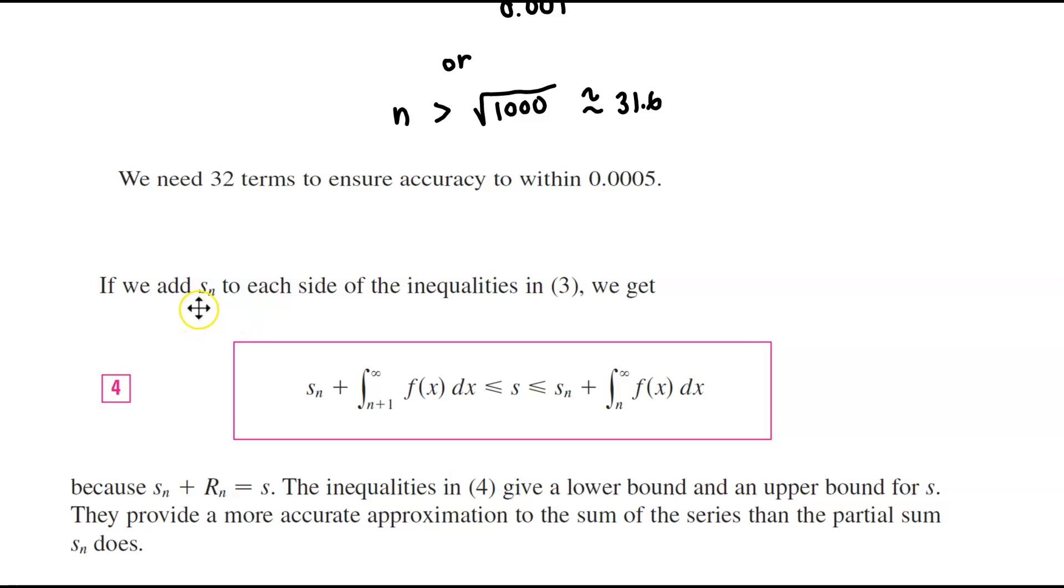Now if we add s subscript n to each side of the inequalities in part 3 then we would get the following. We get s subscript n plus the integral from n plus 1 to infinity of that function. And on the right side we have s subscript n plus n to infinity of that function.